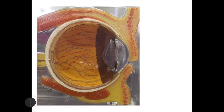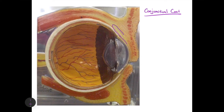Between the eyeball and the eyelids is a transparent mucous membrane found between the cornea, the superior eyeball, and the eyelids themselves. This is called the conjunctival coat. It's drawn here in purple, found between the cornea and the eyelids.